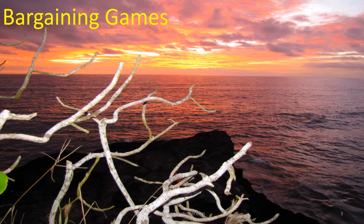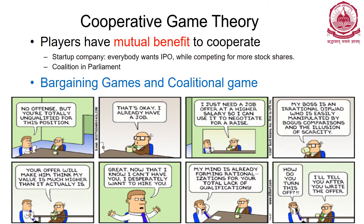While bargaining games are part of an important branch of game theory called cooperative games, players have a mutual benefit to cooperate. For example, coalition in a parliament or a startup company where everybody wants an IPO while competing for more stock shares. So there are two popular cooperative game types: bargaining games and coalitional games.